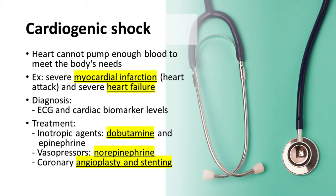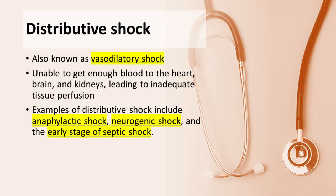Treatment for cardiogenic shock is aimed at improving the heart's pumping ability and restoring blood flow to the body. Medications include inotropic agents such as dobutamine and epinephrine, and vasopressors such as norepinephrine. Coronary angioplasty and stenting may be used to open blocked arteries.